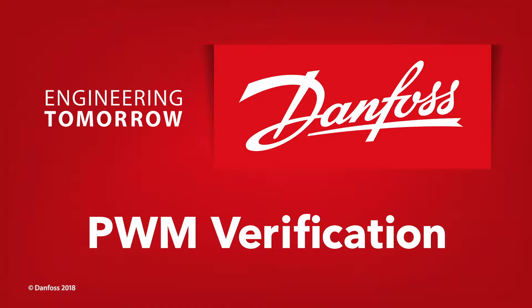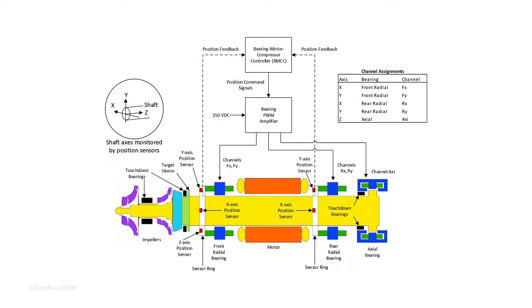As an integral part of the magnetic bearing control system, the PWM amplifier provides power to the electromagnetic bearing coils in response to commands from the BMCC. Additionally, the PWM passes feedback from the bearing current sensors to the BMCC.